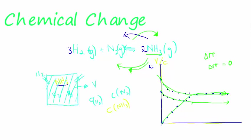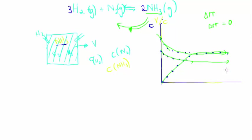Eventually, when it reaches the point where the forward and the reverse reaction is equal, we call it dynamic equilibrium — or chemical equilibrium — which is when my forward reaction rate is equal to my reverse reaction rate. What I'm producing and what I'm decomposing are the same amount of substance.